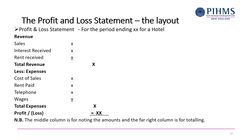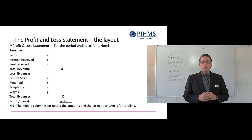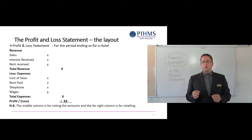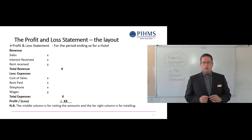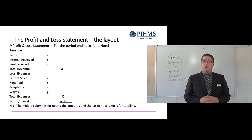Now you've got two figures — total revenue and total expenses — both in the right-hand column, so you work your way down that column: revenue minus expenses gives you a profit or a loss. If it's a positive figure, write 'profit'; if it's a negative figure, just write 'loss'. No need to put 'profit/loss' — just pick whichever applies.